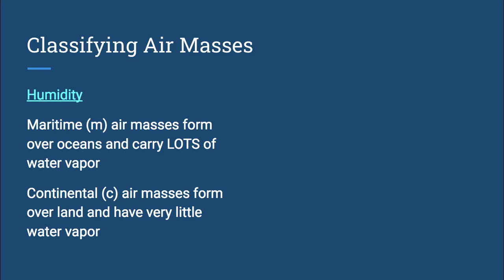Continental air, on the other hand, represented with a lowercase c, forms over the land and will have very little water vapor. Again that makes sense. Since the land doesn't have a lot of water, not very much water vapor will be going into the air.